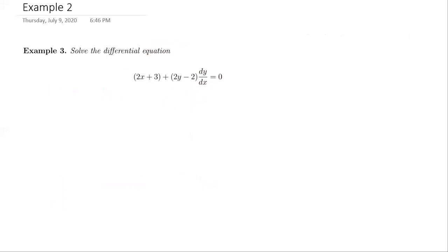Let's solve — and remember that 'solve' is the same as 'find the general solution.' Solve is interchangeable with find the general solution. The general solution is an expression involving all possible solutions for the differential equation. So, solve the differential equation: 2x plus 3 plus 2y minus 2 times y-prime equals 0.